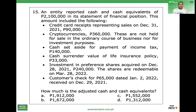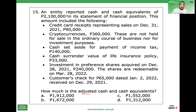Okay class, let's continue. Financial assets, number 15: cash and cash equivalents. An entity reported cash and cash equivalents of two million one hundred thousand in its statement of financial position. This amount included the following items. The requirement is to determine the adjusted cash and cash equivalents.